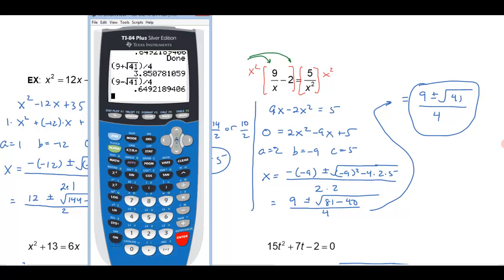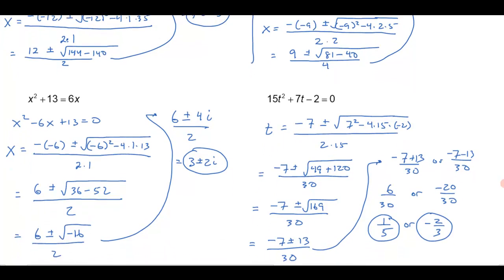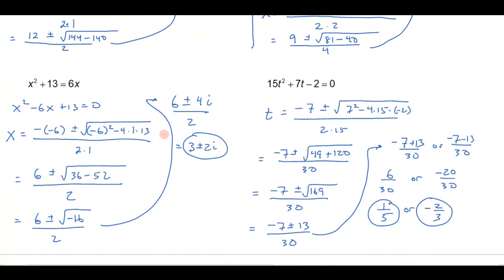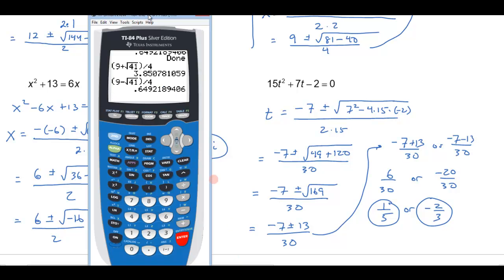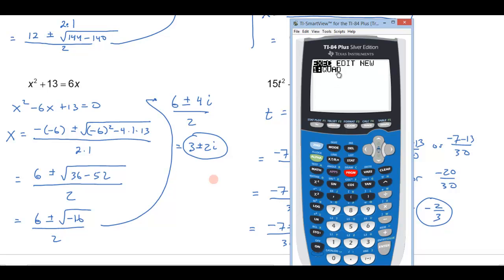Alright, let's try another one. Let me scroll down here. Here was a problem we did that had non-real solutions. Let's see what happens if I try that in my quad program. So I need to go back to my program button and hit the quad program, and A in this case is 1, and B is negative 6, and C is 13. And, oh, it says it's a non-real answer, so it's recognizing that it's not going to be a real number.